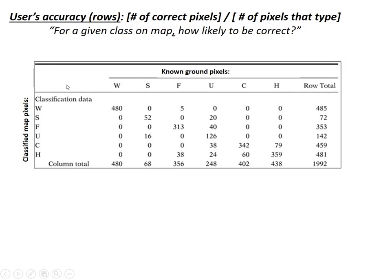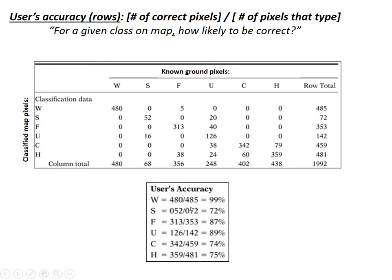Now let's look at the user's accuracy, staying with sand. For pixels on the map, you're just the person with the map who wants to know where the sand is. You look at it and see there are 72 pixels on the map labeled as sand, and 52 of them are correct. So the user's accuracy for sand is 72%. Coincidentally, the user's and producer's accuracy are the same for sand, but they're not always the same.